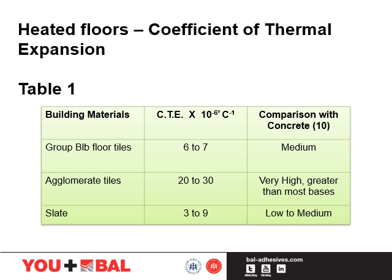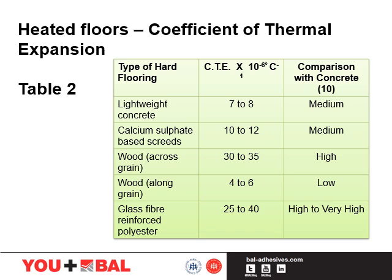We will now show you a couple of tables demonstrating the different thermal expansion rates of different materials. The underfloor heating coefficient of thermal expansion table shows the coefficient of thermal expansion for a selection of tiles and stone. Using the coefficient of thermal expansion for concrete as a baseline, here are three examples of selected rigid floor finishes with widely varying coefficients. Group B1B is porcelain tiles and agglomerate, which is stone and tiles and slates. Looking at a table of selected common backgrounds and taking into consideration the previous table, it is possible to see that the combination of materials when exposed to thermal effects can expand and contract and have a direct influence on the overall long term success of the tiling installation, particularly where it is exposed to thermal effects.